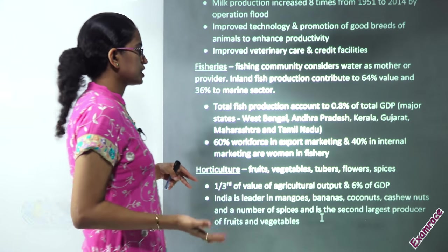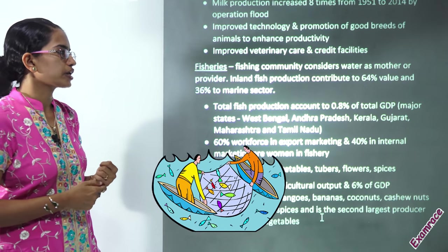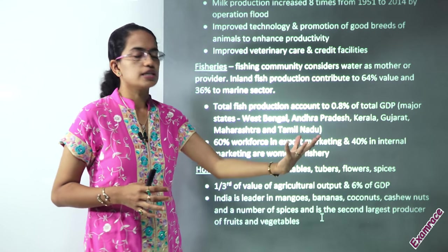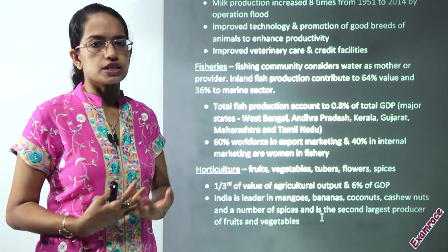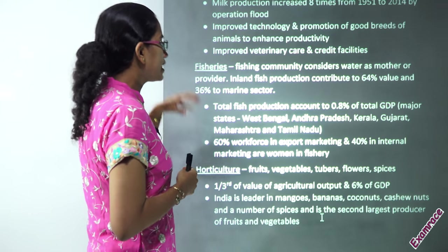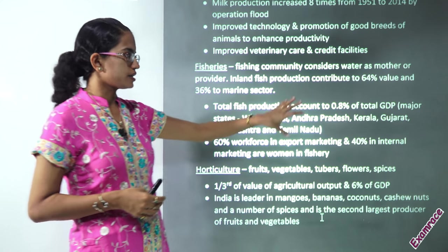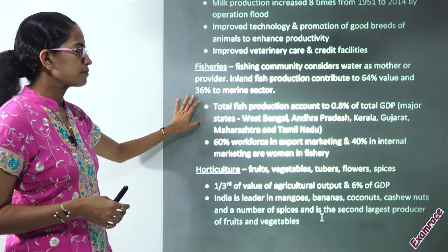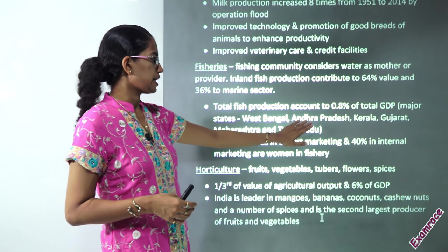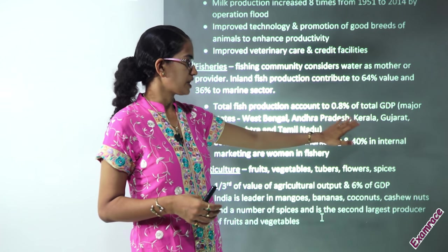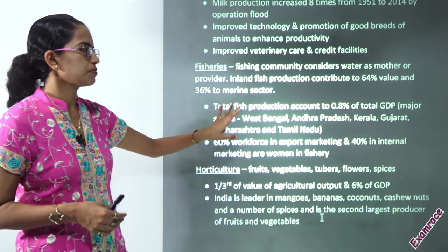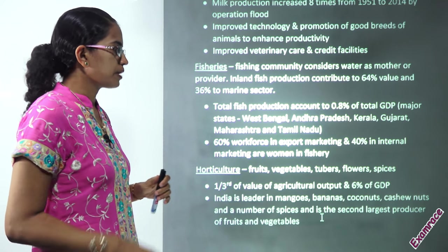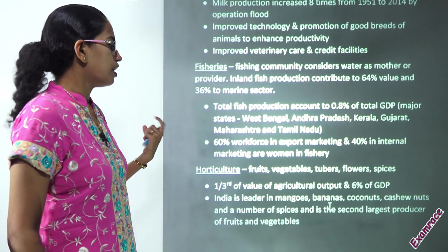Similarly, we have fisheries, and the National Fisheries Board is now working for it. For the fisherman, water is a kind of mother or divine element for the fishes and for the fishery industry to survive. Inland fish production is nearly 64% of the value as compared to the marine sector which contributes only 36%. Most of the fish comes from the states of West Bengal, Andhra Pradesh, Kerala, Gujarat, Maharashtra, and Tamil Nadu. However, fisheries contribute to only about 0.8% of total GDP. About 60% of the workforce in export marketing and 40% in internal marketing are women.